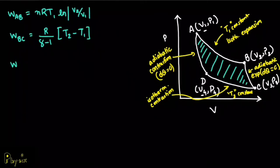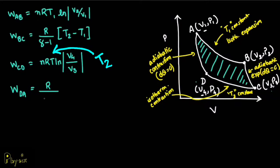For going from C to D, this is basically NRT, the natural logarithm of V4 over V3, the final over the initial. For W_DA, that is basically R over gamma minus 1, and in bracket we have T1 minus T2. Over here the temperature is T1, and over here it is T2.